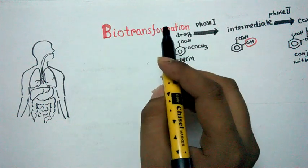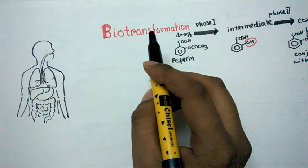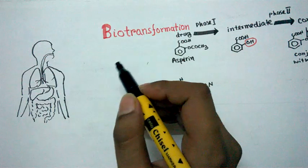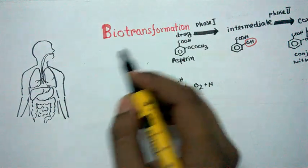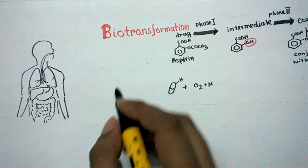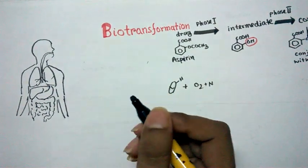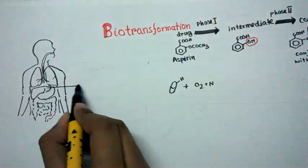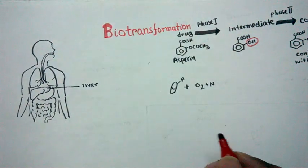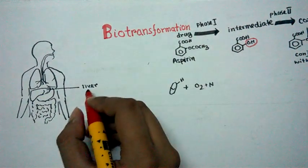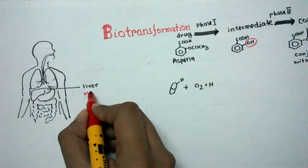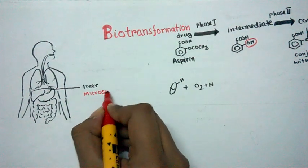The major reactions take place in the liver. The cytochrome P450 system plays a vital role in biotransformation reactions. The main site for biotransformation reaction is the liver. In the liver, the first biotransformation reactions are carried out by the microsomal enzyme system.